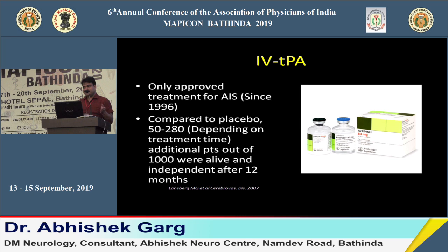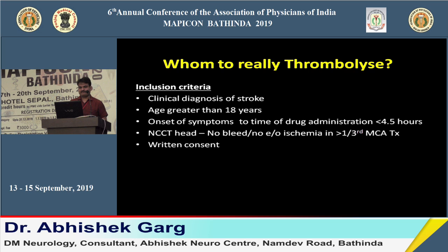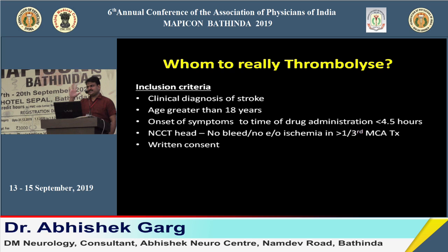If patients of acute ischemic stroke are treated with IV tPA within the time window, 50 to 280 additional patients per 1000 will be alive and independent after 12 months compared to placebo. The ideal candidate for thrombolysis is a patient with sudden onset focal neurological deficit, clinical diagnosis of stroke, CT showing no bleed, and presentation within 4.5 hours.